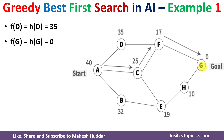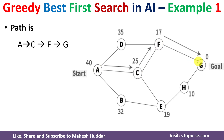We need to expand G, but before we expand G, we check whether G is the goal node. G is the goal node, so we stop here. The final path from start state to goal state is: A to C, C to F, and F to G.